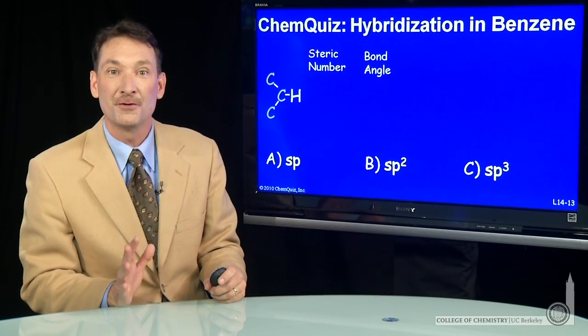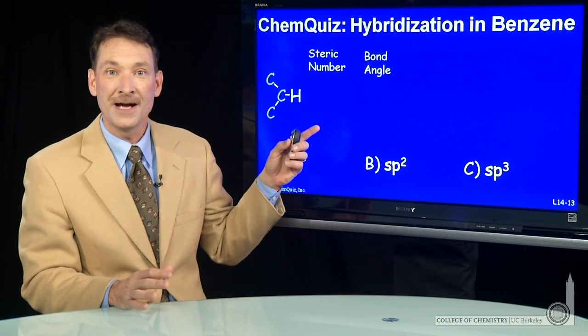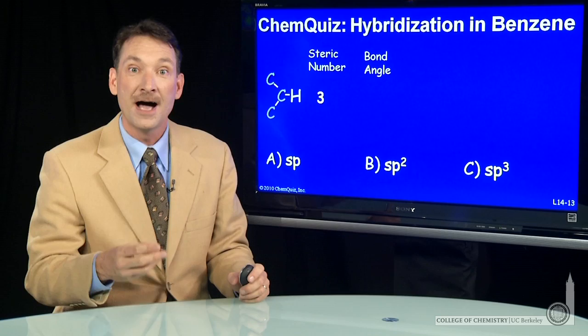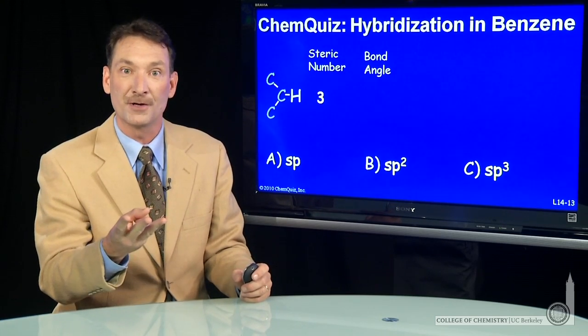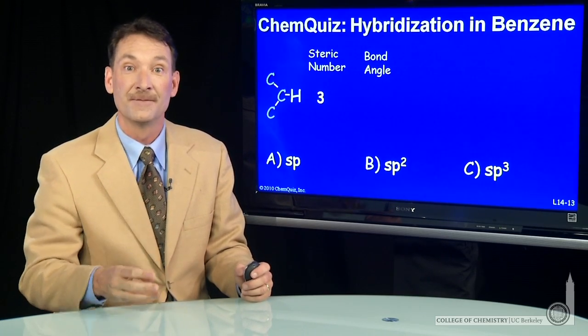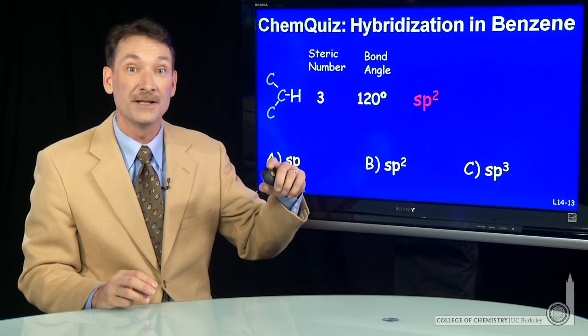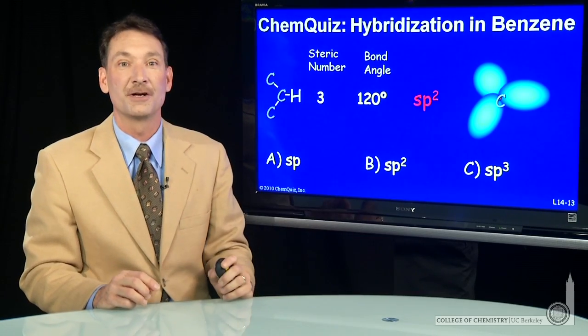Carbon in benzene has to accommodate three things, two other carbons and a hydrogen. So to accommodate three things with steric number three, I have to hybridize three atomic orbitals, an s and two p's. That leads to sp2 hybridization, three equivalent orbitals that have 120 degree bond angle.